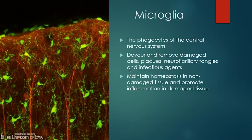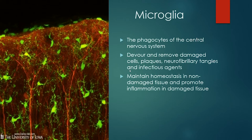Microglia are the phagocytes of the nervous system — they travel around picking up dead cells and looking for infectious agents. They're the cleanup system of the brain, making sure there are no bad agents messing things up, and they're heavily involved in homeostasis. They're also heavily involved in inflammation responses, which is closely tied to neurodegenerative decline. If you get into Alzheimer's research, the inflammation response is really heavily tied to a lot of that neurodegenerative decline, and microglia are heavily studied in that context.